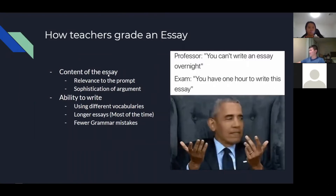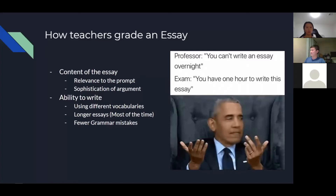Teachers base their scores on two main factors: the content of the essay and your ability to write. Content means how relevant your essay is to the prompt. Ability to write includes using different vocabularies — longer essays usually score higher. They also look at grammar mistakes, because too many grammar errors may impede understanding and result in a lower score.